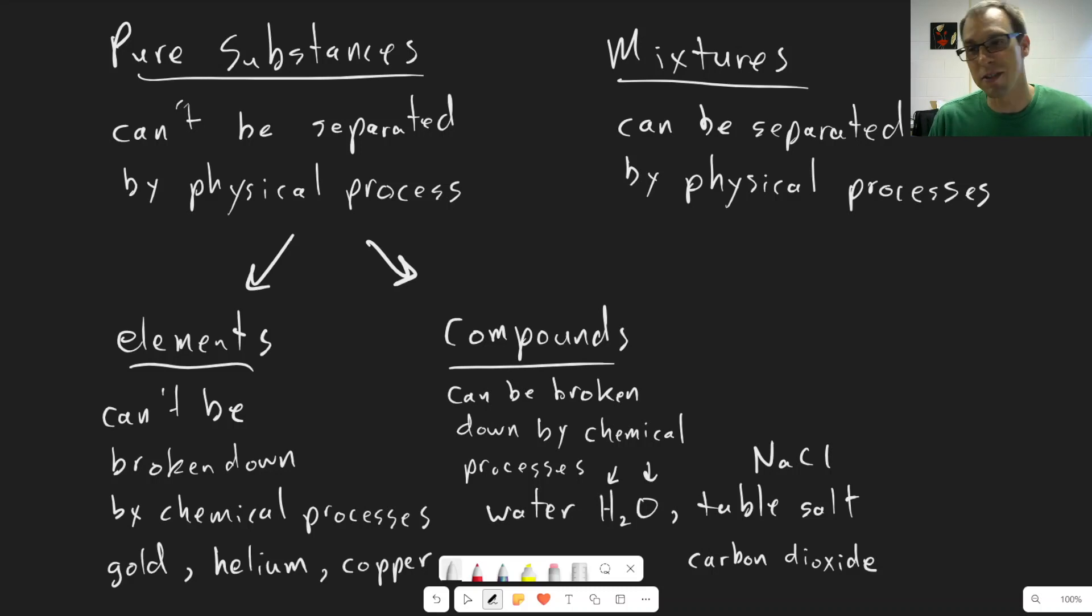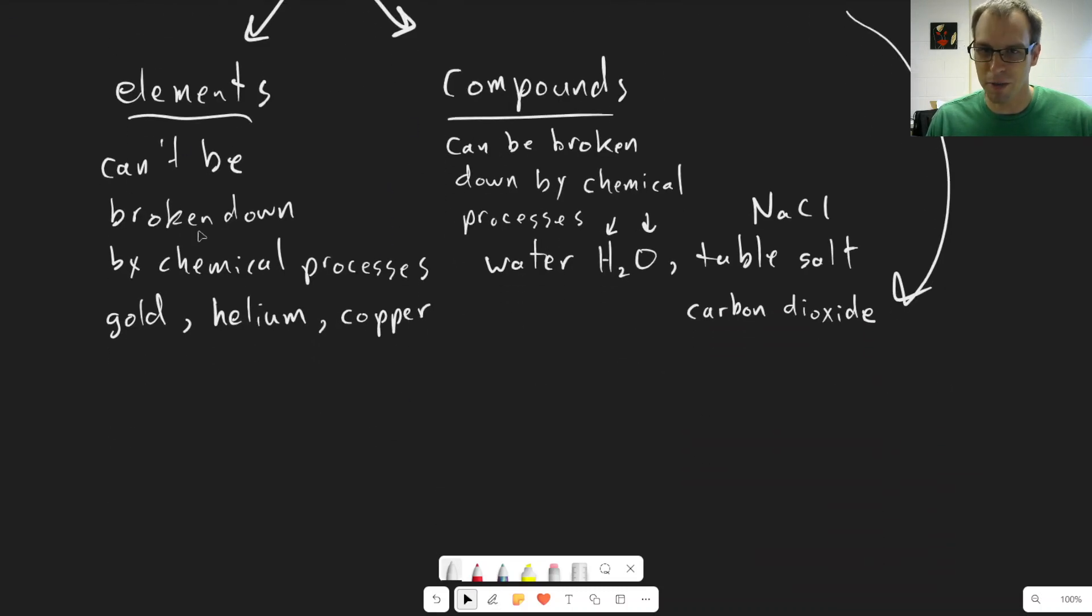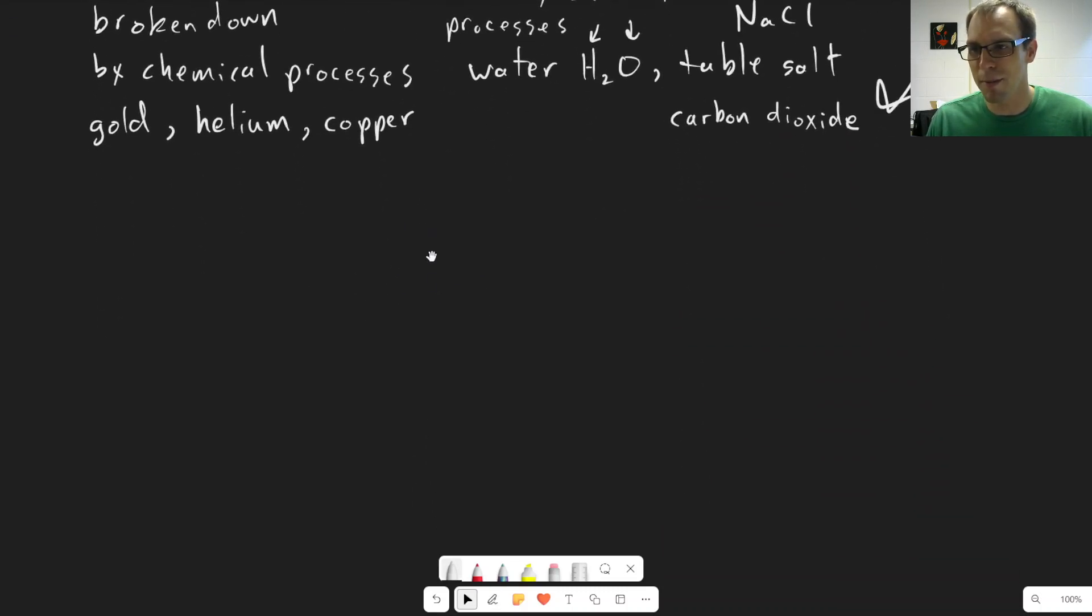Most of the things that we encounter on an everyday basis are made out of compounds. And most of the things are actually mixtures. They're usually not just pure substances by themselves. So speaking of which, let's talk about mixtures. These are things that can be separated by physical processes and are generally made up of elements or compounds mixed together.